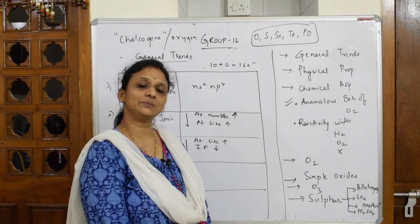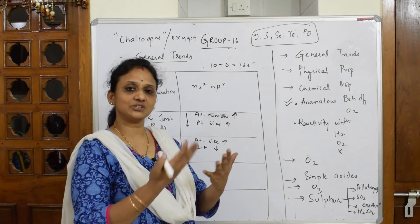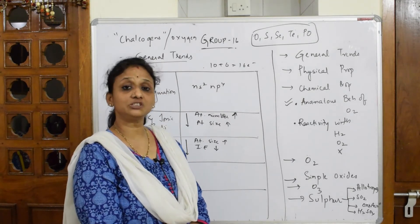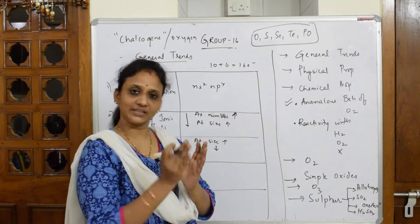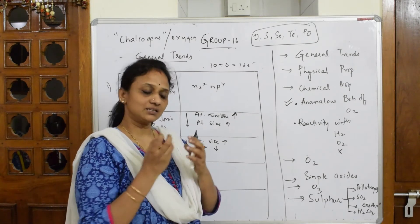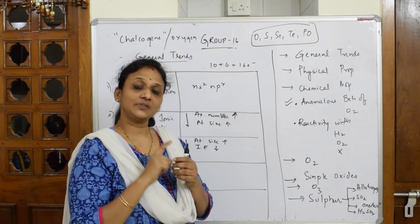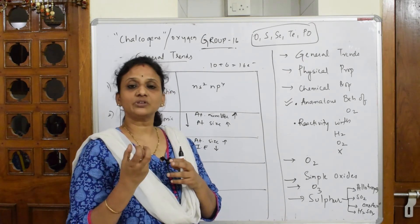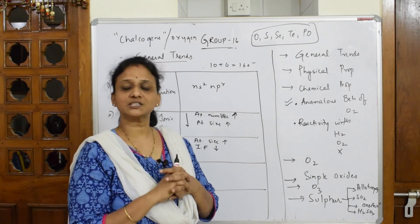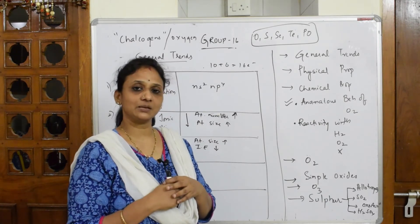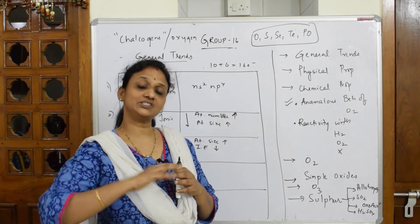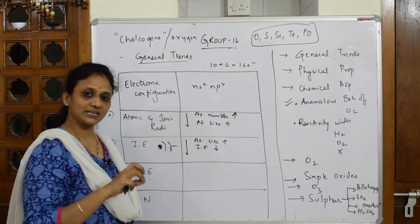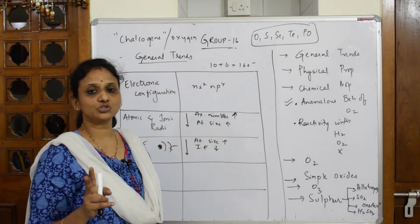Many students have doubt about electron gain enthalpy. Electron gain enthalpy is the energy change when an atom gains an electron. There are two types: positive electron gain enthalpy, where energy must be supplied to the atom to allow it to accept an electron; and negative electron gain enthalpy, where energy is released when an electron is added to the atom. Both concepts involve gaining an electron.